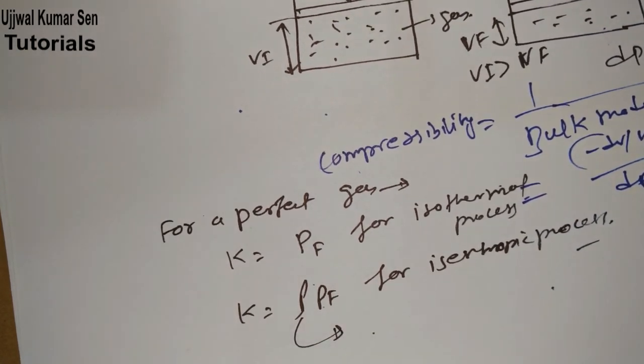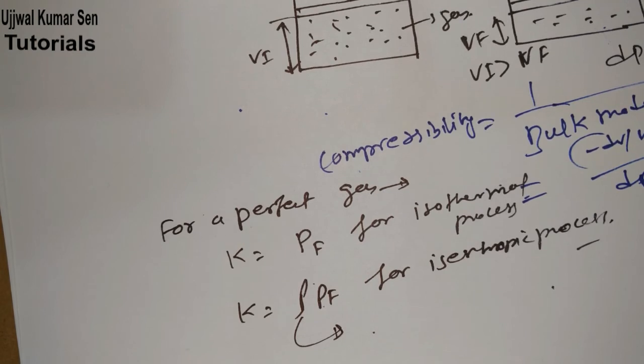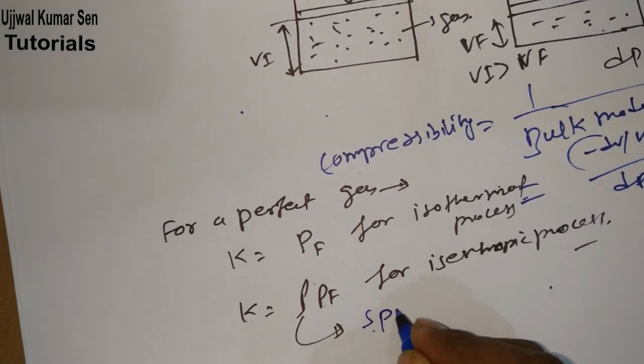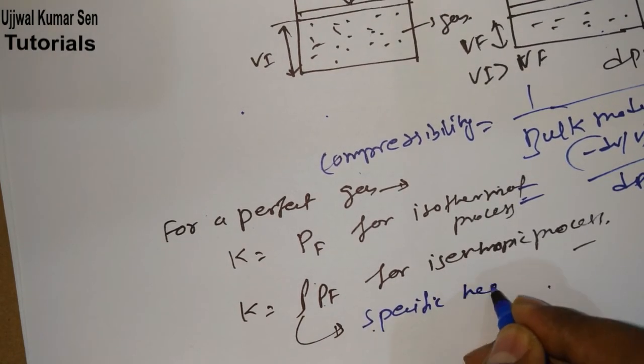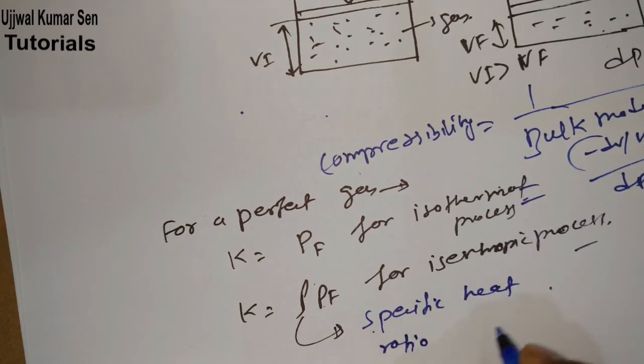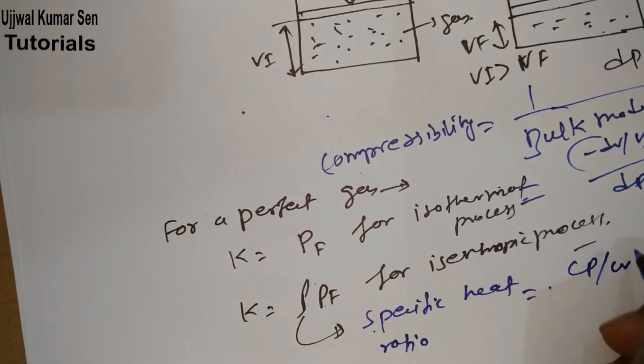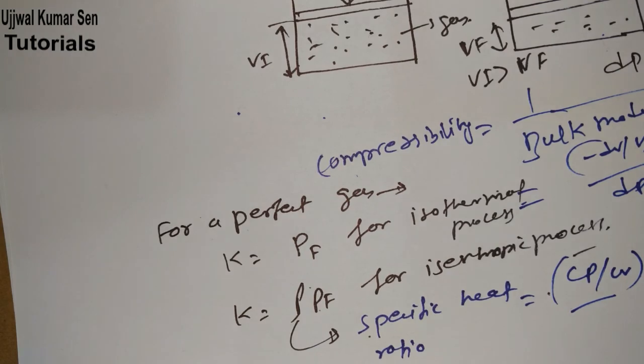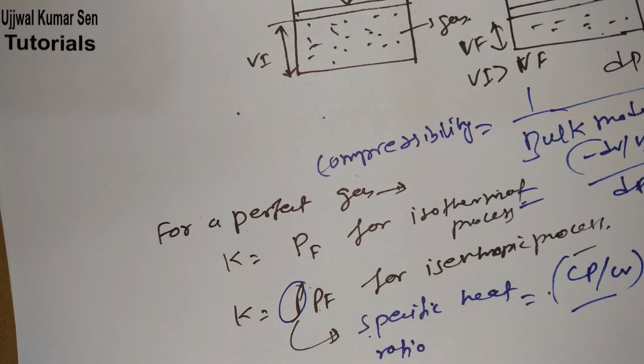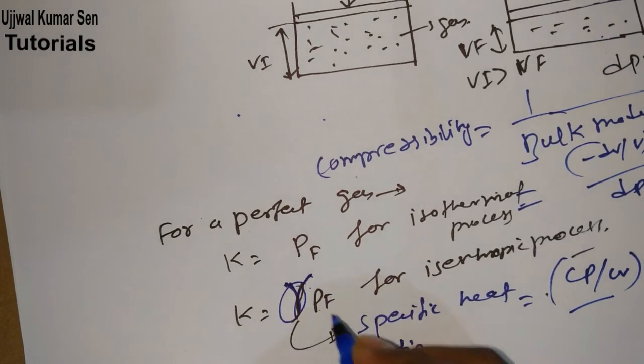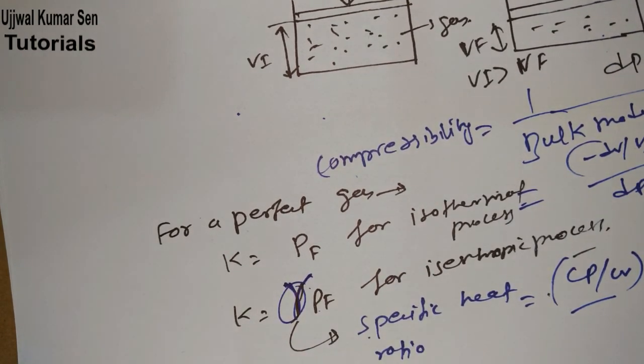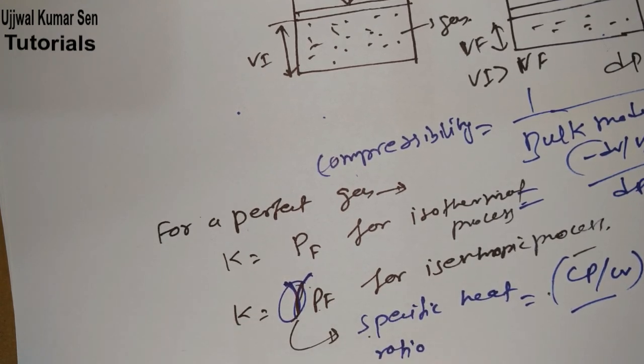Gamma is not density. What is it? Specific heat ratio, which is equal to Cp upon Cv. I'm considering this is gamma, not rho, so this is gamma equals Cp upon Cv.